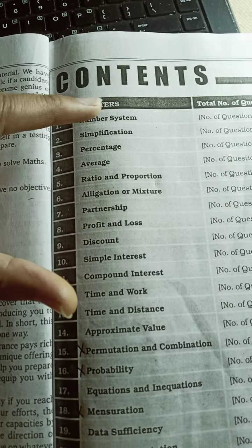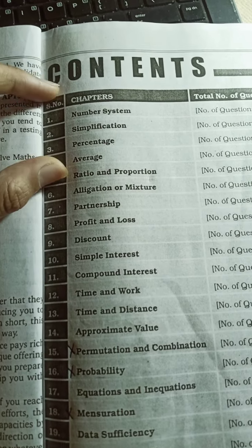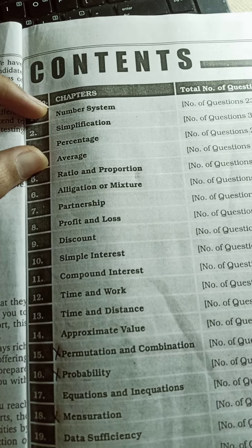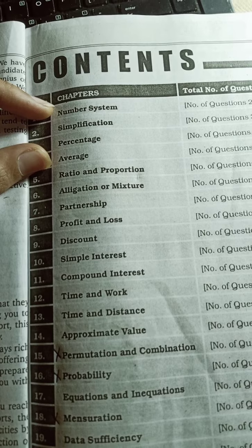Now I will tell you how to do it. Number system, simplification, percentage, average - these 4 chapters you don't need to extensively study. Just try yourself, see how you can do it.